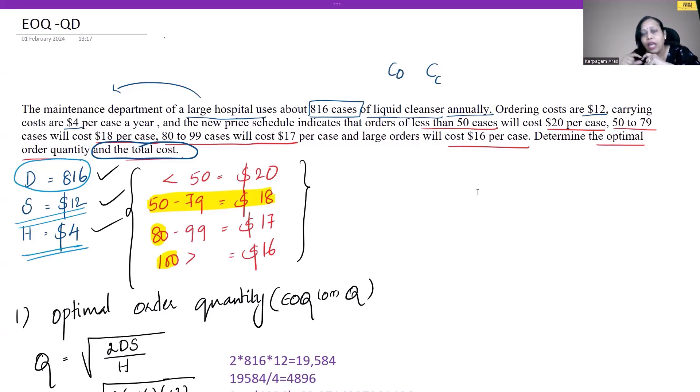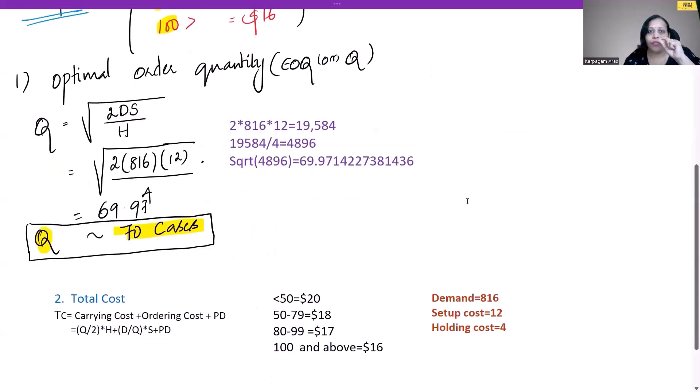To do that, we are going to calculate the total cost for 70, which is the EOQ. We will calculate total cost at Q = 70, which is our EOQ. Not only that, 70 falls within the range of 50 to 79. Calculating the total cost less than this price point will be of no use to us. So we are calculating the minimum economic order quantity, then I am going to check it at TC 80 and then TC at 100.